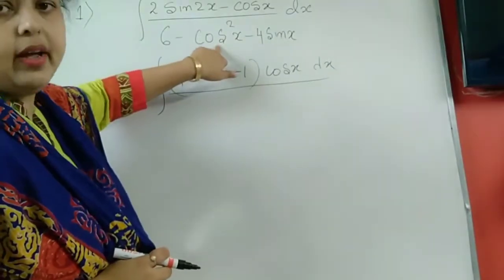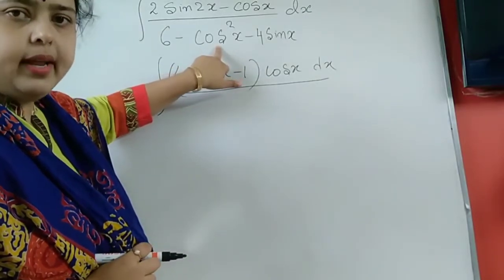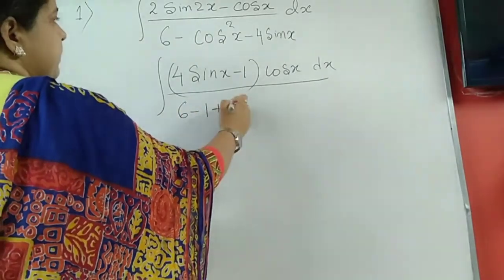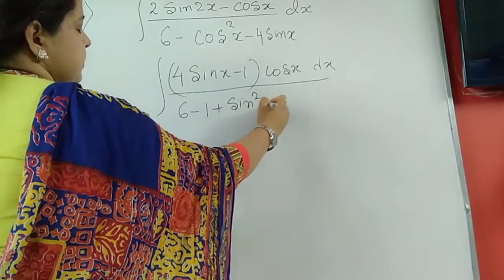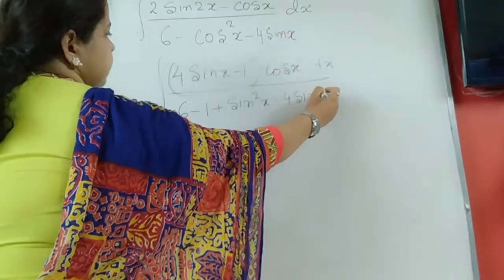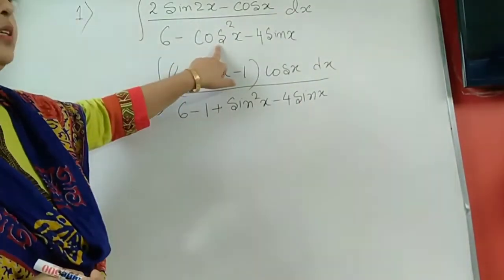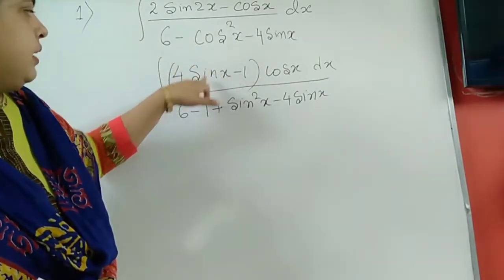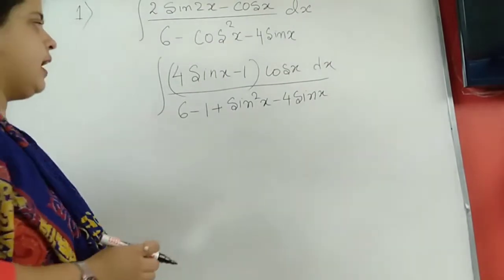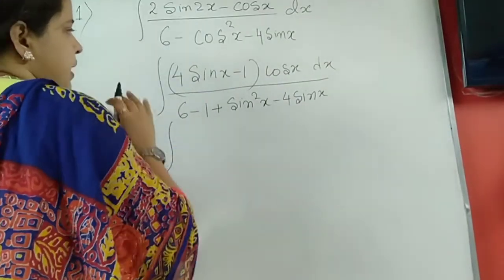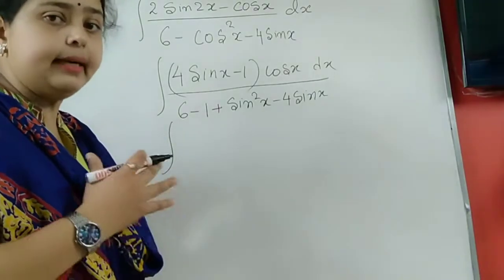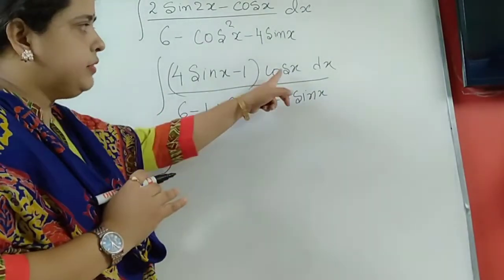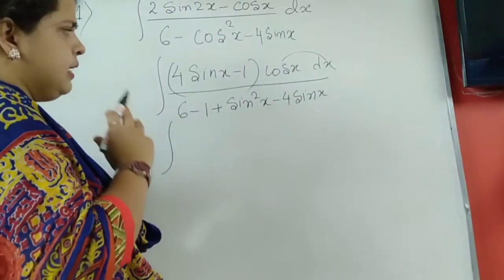Let us convert cos²(x) into 1 minus sin²(x). So the expression becomes: we are converting cos²(x) into 1 minus sin²(x), and a minus sin is in the front. The value I am going to substitute as t will be sin(x) only, and for that reason I have taken this cos(x)dx out.